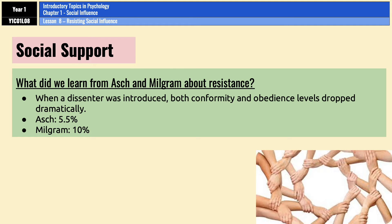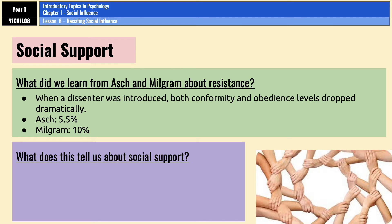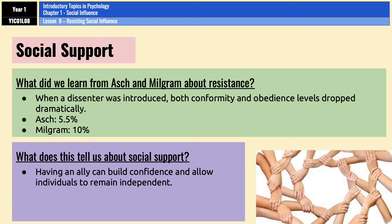Social support increases the chances of people resisting the urge to conform or obey for several reasons. Firstly, it reduces the pressure of normative social influence, because if there's a dissenter, you're not going to be the odd one out and not the only one rejected from the group. In terms of obedience, a dissenter challenges the legitimacy of the authority figure, so you're more likely to disobey. Both of these increase a person's confidence and make it easier to act independently according to their own morals, beliefs, and values.